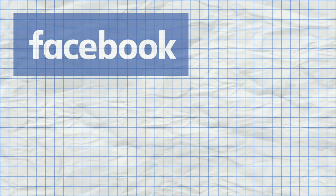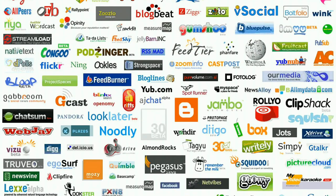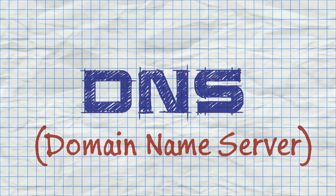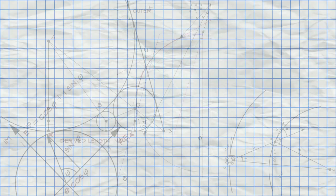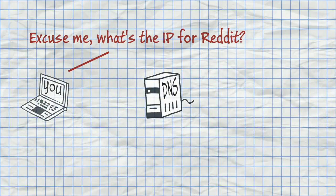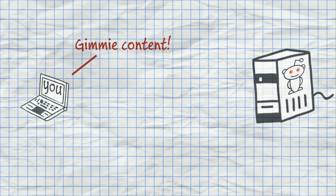Instead of memorizing an arbitrary number, you just type facebook.com or reddit.com. But there are literally billions of sites on the internet — your computer can't possibly know the IP address of every one of them. For that, we need a special kind of server called a domain name server, or DNS. This is a computer that helps your computer get the IP addresses of sites you're trying to visit. So you type reddit.com, your computer asks the DNS for the IP address, the DNS replies, and then your computer can contact reddit — it happens in the blink of an eye.